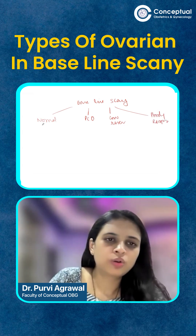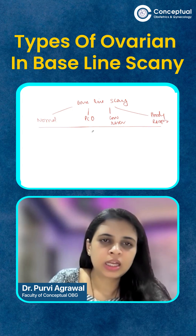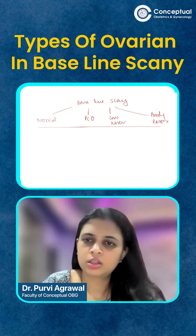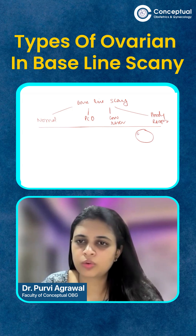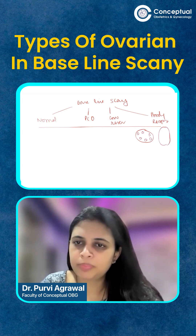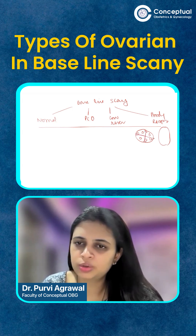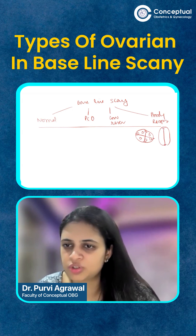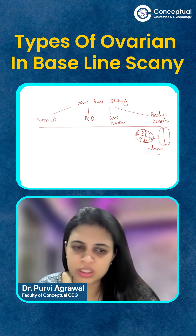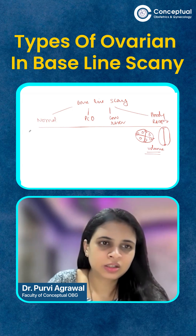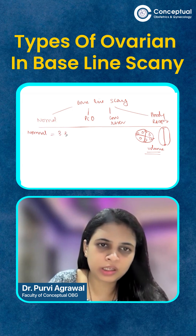So how do you classify them? For example, this is one ovary — how do you measure the diameter? You take one section, then take the perpendicular measurement, rotate your probe 90 degrees, and take the third measurement. This will give you the volume.